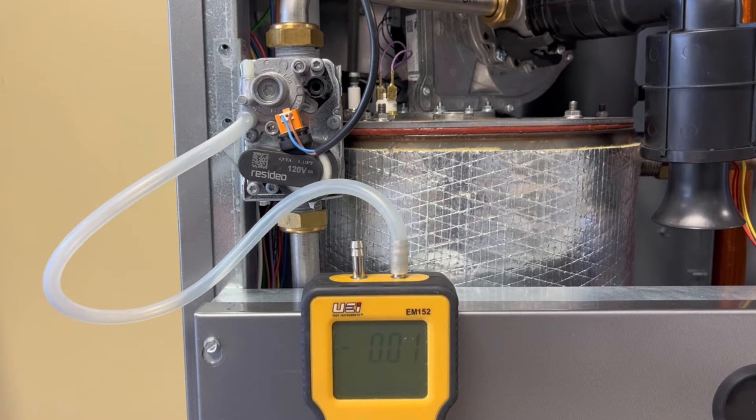Now you want to adjust the low fire adjustment screw while the boiler is running in low fire until the pressure on the manometer reads zero.